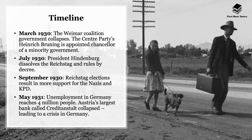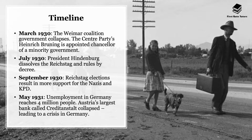This had a reverberating impact not only on America but on Germany, because Germany had been essentially bankrolled in its recovery by America. In March 1930 the Weimar coalition government collapsed, and with Stresemann gone, the main political unifying factor had been removed. The Centre Party's Heinrich Brüning was appointed chancellor of a minority government. In July 1930, President Hindenburg dissolved the Reichstag and ruled by decree, effectively acting as a dictator by suspending Article 48 and the constitution.